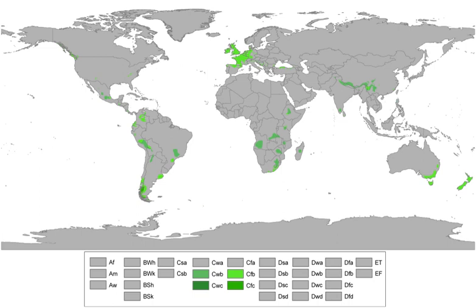Areas with subpolar oceanic climates feature an oceanic climate but are usually located closer to polar regions. As a result of their location, these regions tend to be on the cool end of oceanic climates, and snowfall tends to be more common here than in other oceanic climates. Subpolar oceanic climates are less prone to temperature extremes than subarctic or continental climates, featuring milder winters. They feature only one to three months of average monthly temperatures that are at least 10 degrees Celsius, and none of the average monthly temperatures fall below minus 3.0 or 0 degrees Celsius. Typically, these areas in the warmest month experience daytime maximum temperatures below 17 degrees Celsius, while the coldest month features highs near or slightly above freezing and lows just below freezing.